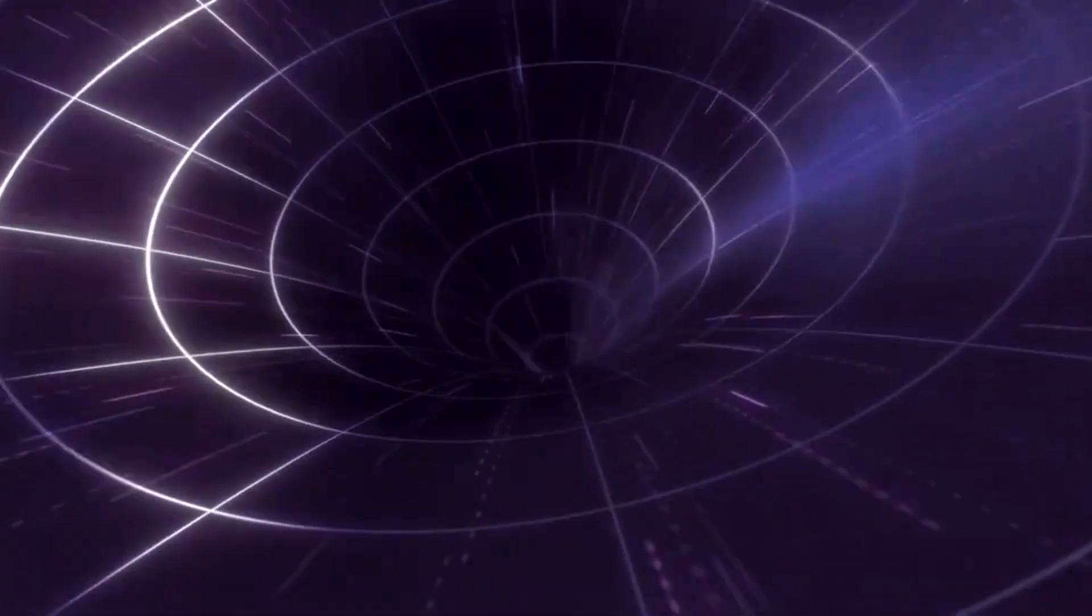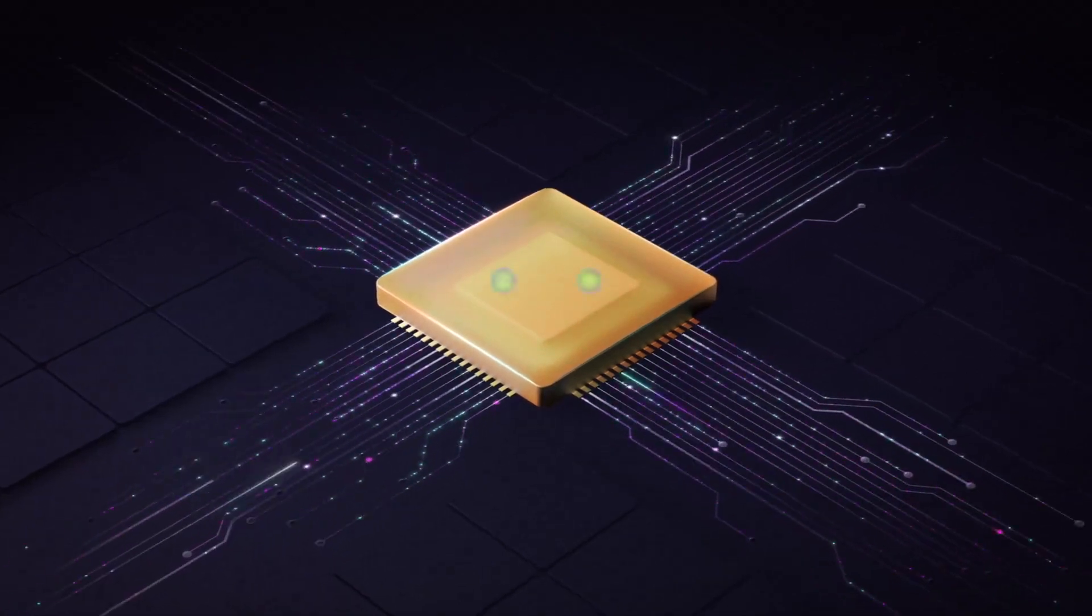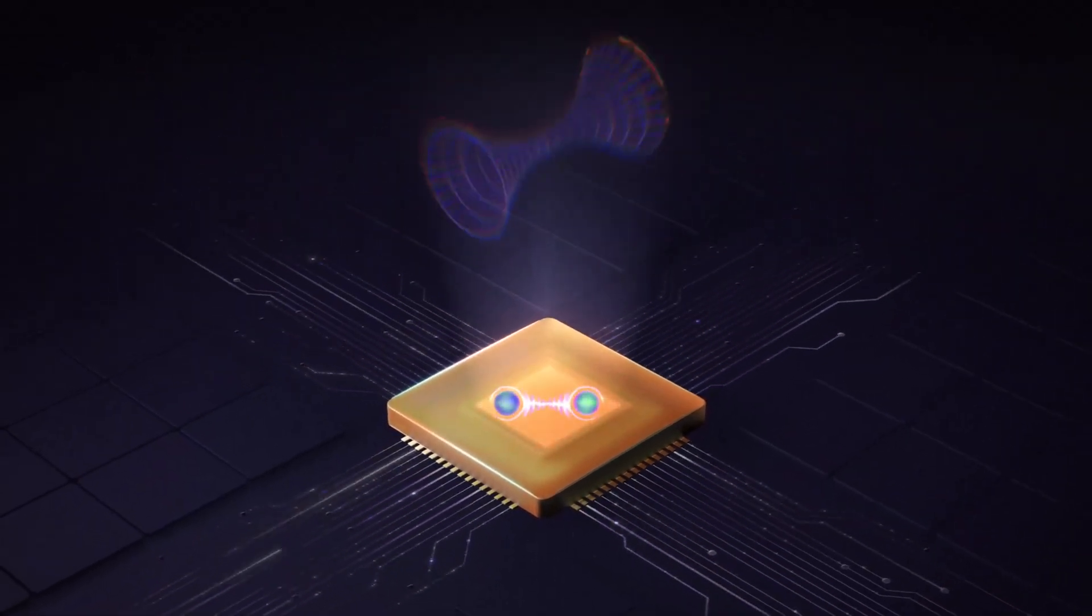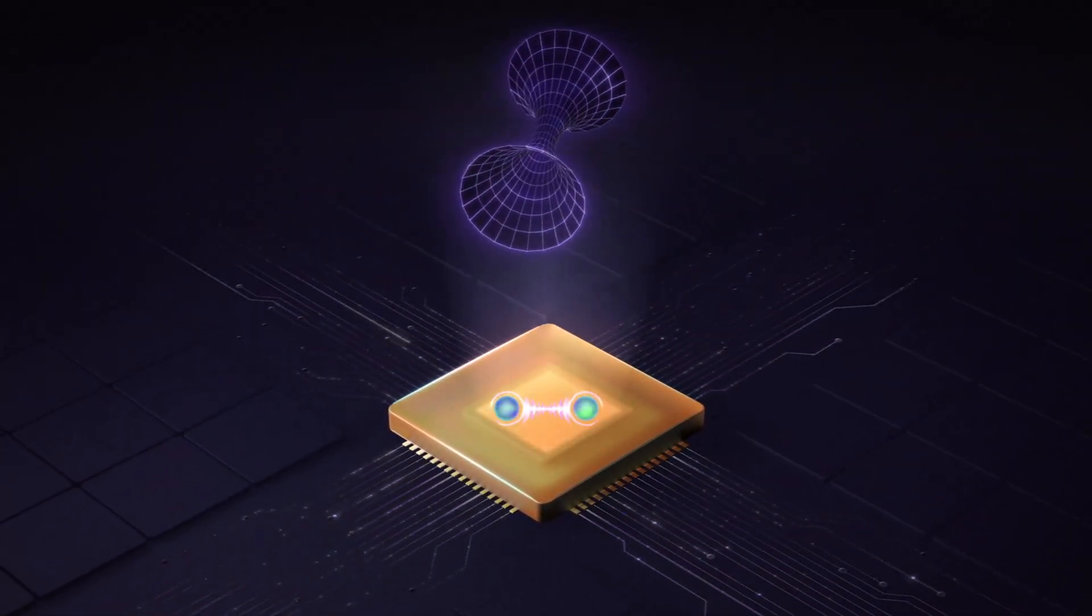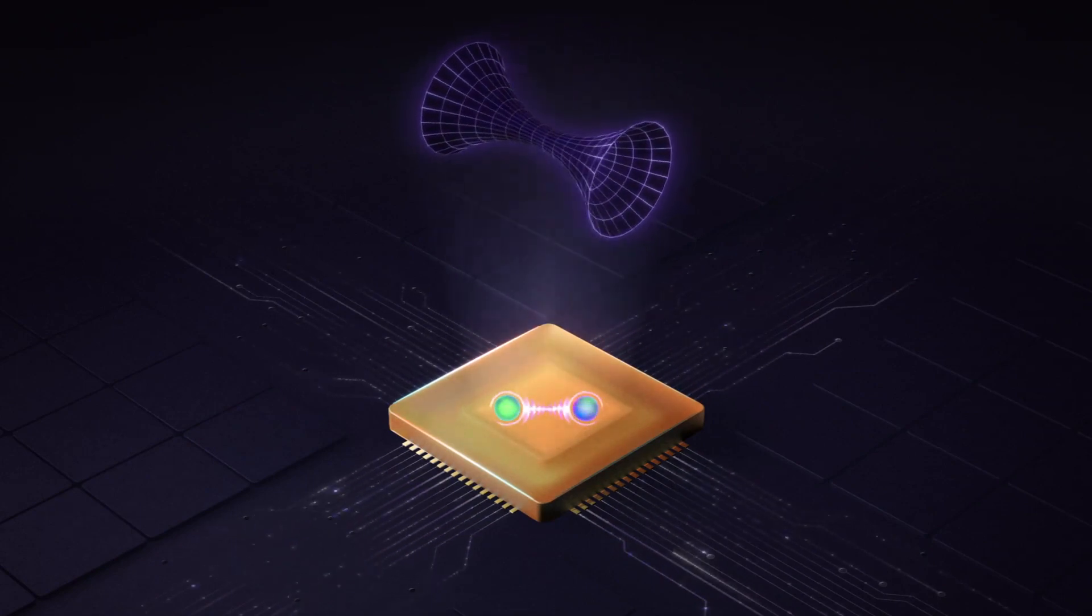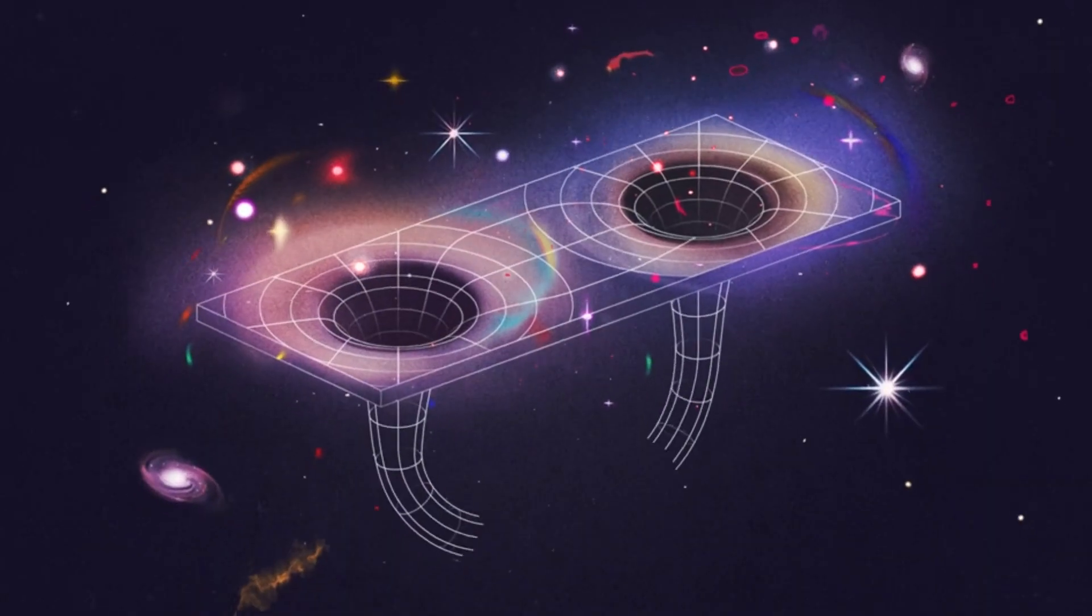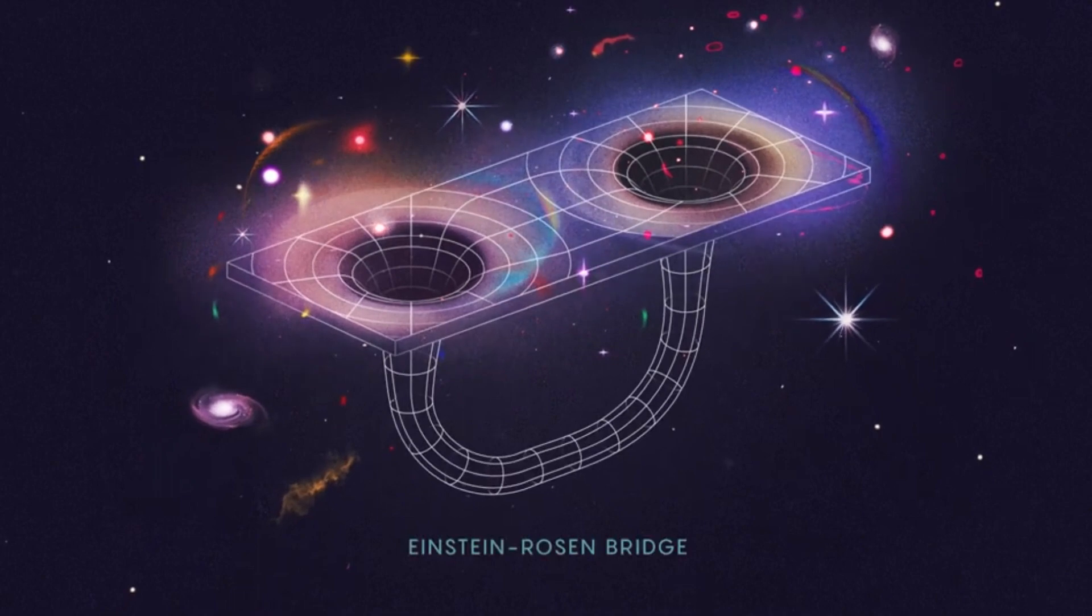A wormhole is a theorized passage that creates a shortcut in space-time. Scientists created one in a quantum computer. The wormhole is created inside a quantum computer that teleported a message from one side to the other, and this could help scientists observe the theorized passages in real space.